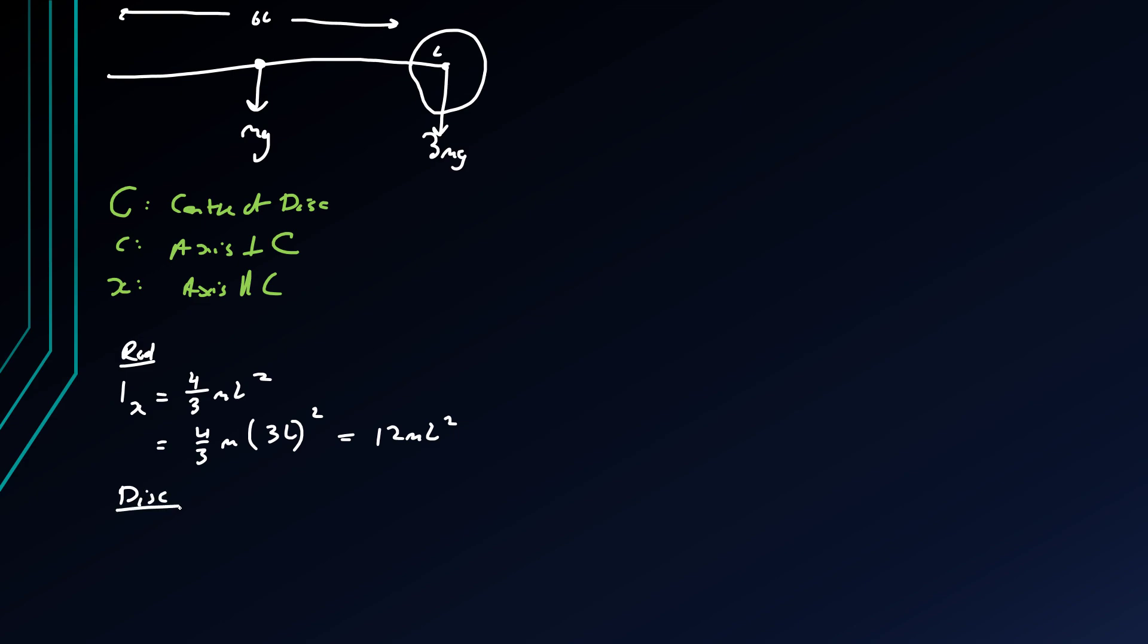Now for the disk we have that the inertia about this disk, which I'll actually keep right as capital I, is one half mr squared which is one half of 3m by l squared which is just three halves ml squared.